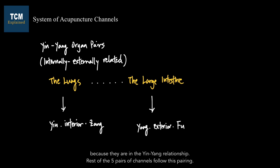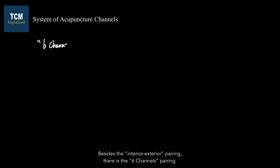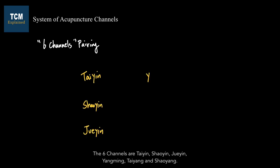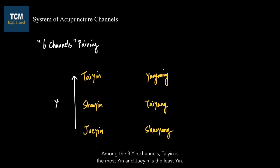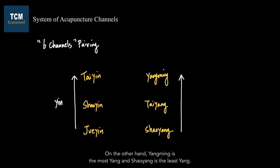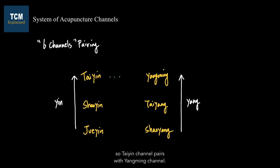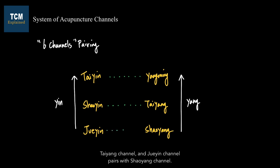Besides the interior-exterior pairing, there is the six channels pairing. The six channels are tai yin, xiao yin, jue yin, yangming, tai yang, and xiao yang. Among the three yin channels, tai yin is the most yin and jue yin is the least yin. On the other hand, yangming is the most yang and xiao yang is the least yang. The channel that is the most yang will balance the channel that is the most yin, so tai yin pairs with yangming, xiao yin pairs with tai yang, and jue yin pairs with xiao yang.